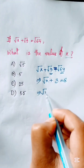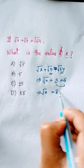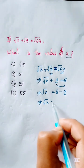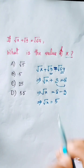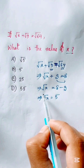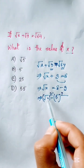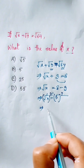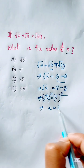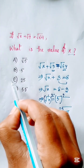So root x is equal to 8 minus 3, which gives root x equals 5. Now we square both sides, the square root vanishes, and we get x equals 5 squared, that is 25. So 25 is our answer — the answer is C.